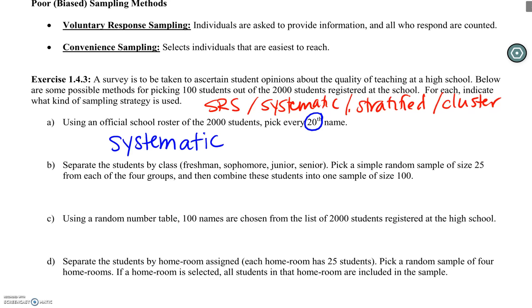Second one is the hardest one, right? Because it's going to be the first time we see that there's a grouping. We're separating them by class. And then we're taking a random sample of 25 from each of those four classes. So the groups are similar. Our samples are of students from each of the groups. This is a stratified.